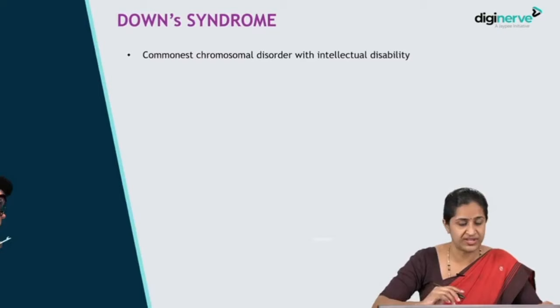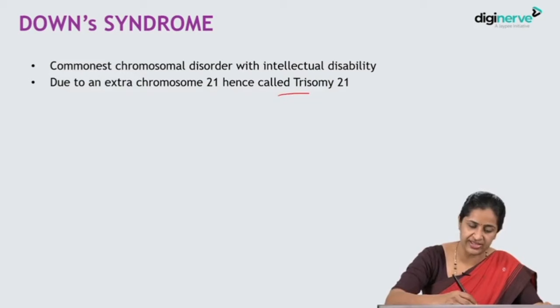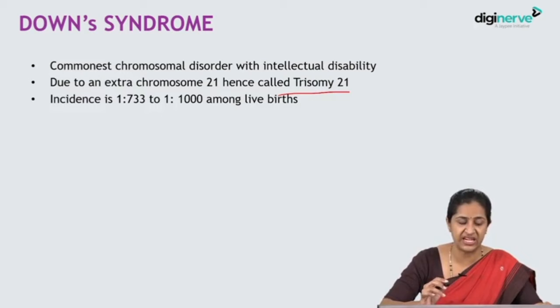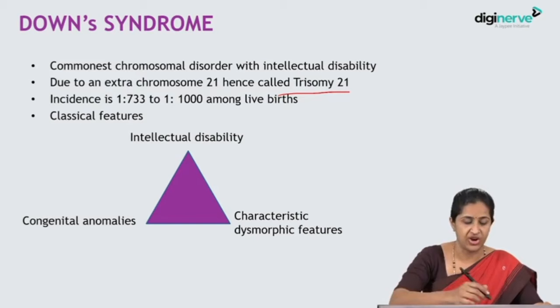Down syndrome is the commonest chromosomal anomaly with intellectual disability. It occurs due to the presence of an extra chromosome 21, hence it is called trisomy 21. The incidence ranges from 1 in 733 to 1 in 1000 among live births. The essential features of Down syndrome can be intellectual disability, congenital anomalies, and characteristic dysmorphic features — all three together synchronized to form Down syndrome.